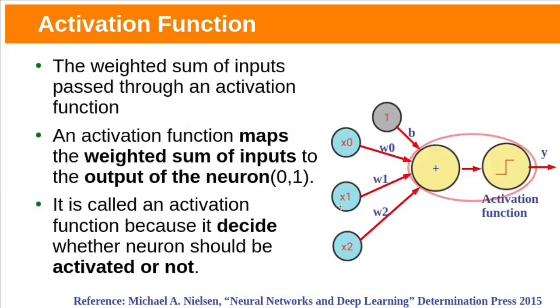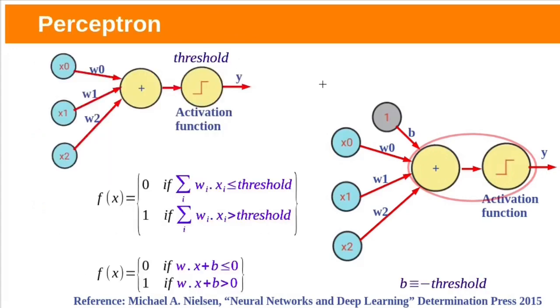In Perceptron, weighted sum of inputs passes through the activation function. Here it is step function. This weighted sum will be continuous values. Activation function maps this weighted sum of inputs to output of the neuron. Here it is 0 or 1. It is called as activation function because this function decides whether neuron should be activated or not, means whether neuron should be fired or not.